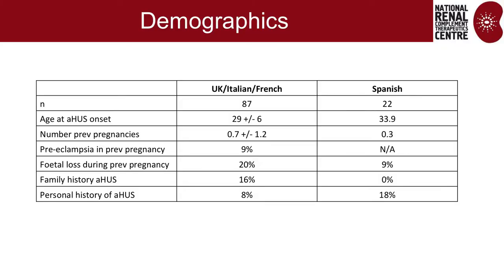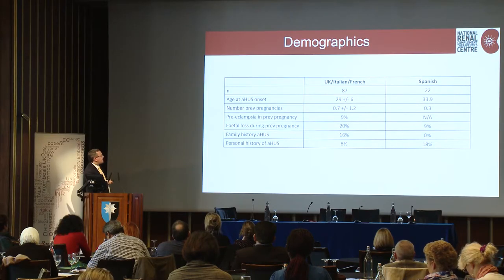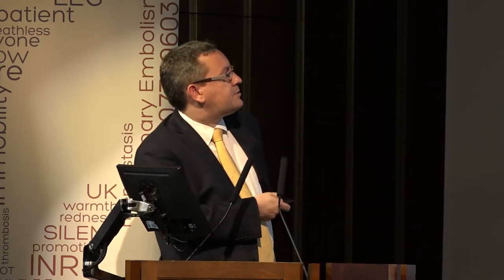Mean age was about 29, similar for the Spanish group. About half had had a previous pregnancy. In the larger group, about 10% had preeclampsia in the run-up. Studies on preeclampsia show the reported mutations aren't functionally significant. Fetal loss is quite common, and family history of HUS is relevant. If you've had HUS before, you're likely to develop it again during pregnancy.